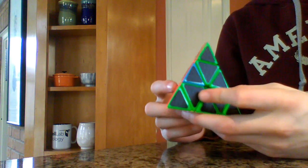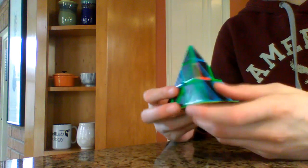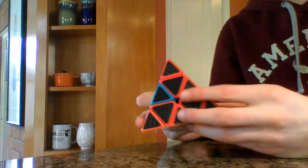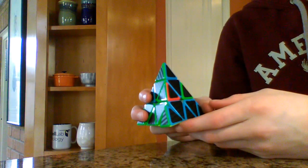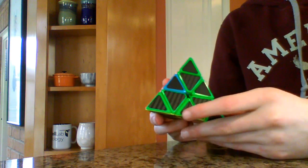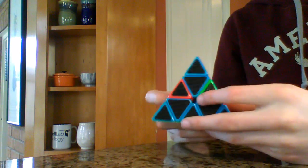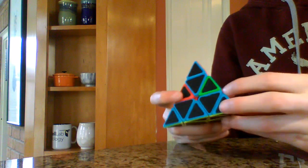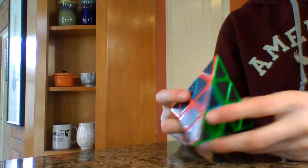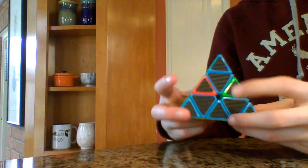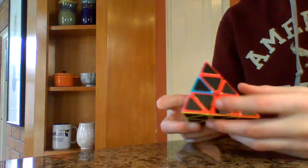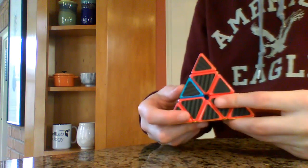For the last layer, we want to get all of these edges fixed, and that will solve the Pyraminx. To start, we want to have two edges that are wrong. Right now we have three edges wrong, but we want to get it down to just two.